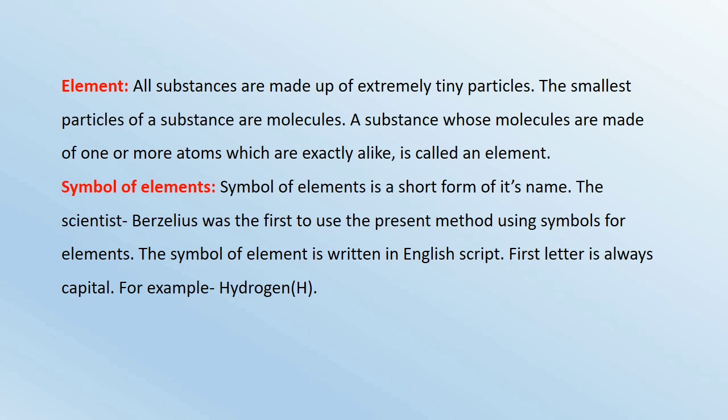Element: All substances are made up of extremely tiny particles. The smallest particles of a substance are molecules. A substance whose molecules are made up of one or more atoms which are exactly alike is called an element. Symbol of elements is a short form of its name. The scientist Berzelius was the first to use the present method using symbols for elements. The symbol of element is written in English script. First letter is always capital.